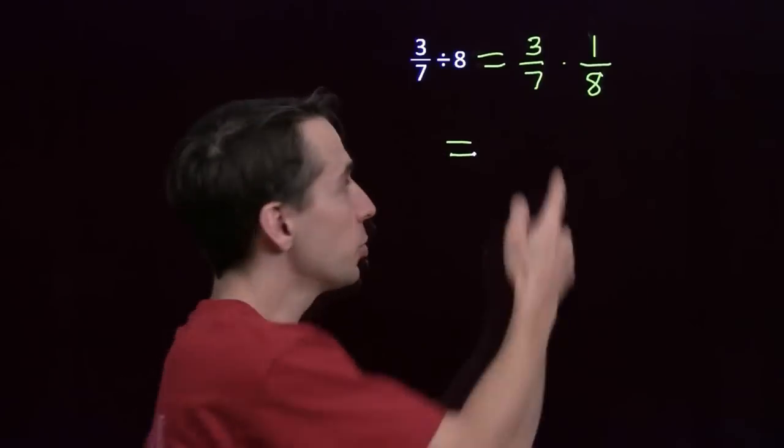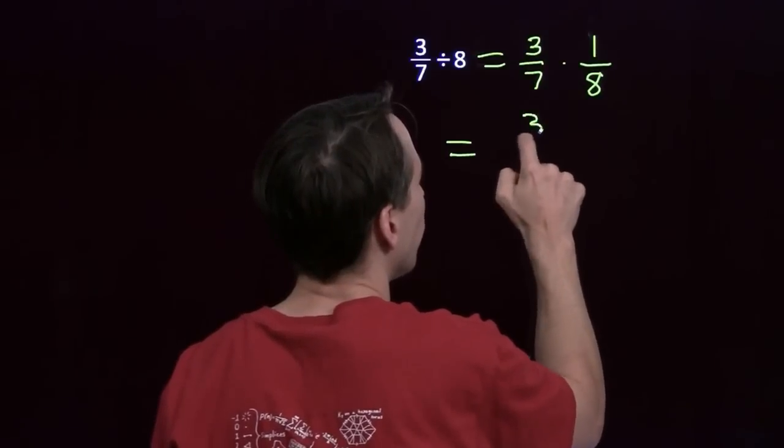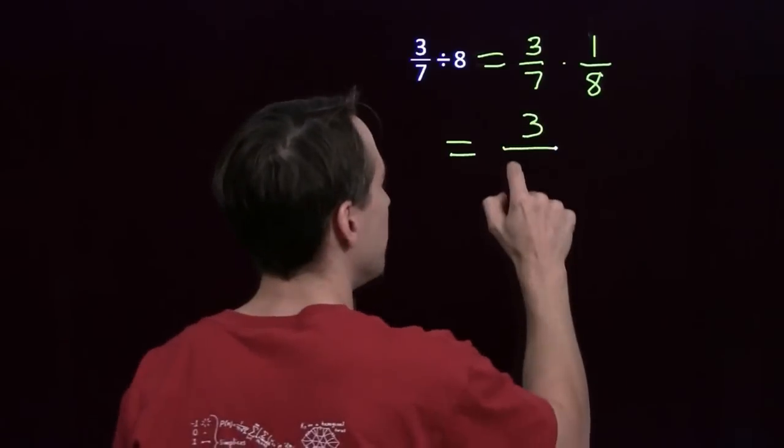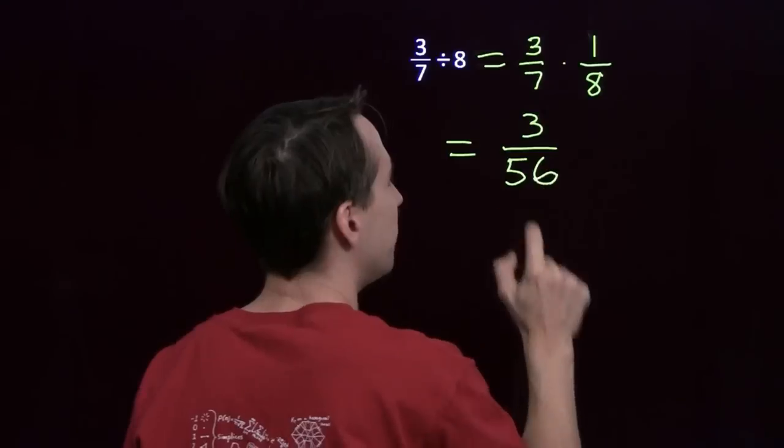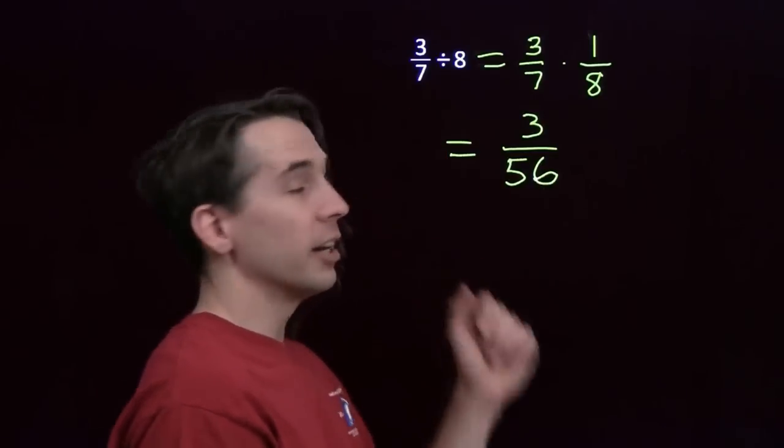And we know how to multiply fractions. We just multiply the numerators, 3 times 1 is 3, and we multiply the denominators, 7 times 8 is 56. So we divided a fraction by an integer.